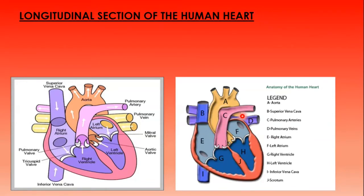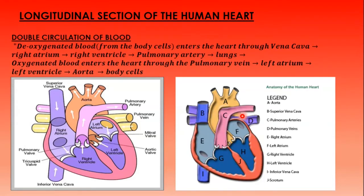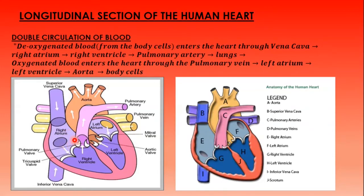Now let us study how blood circulates through the human heart by looking at what we call double circulation of blood. Before the heart pumps the blood, the blood must be collected from the body cells. Blood coming from the cells of the body is lacking oxygen, so it is called deoxygenated blood.